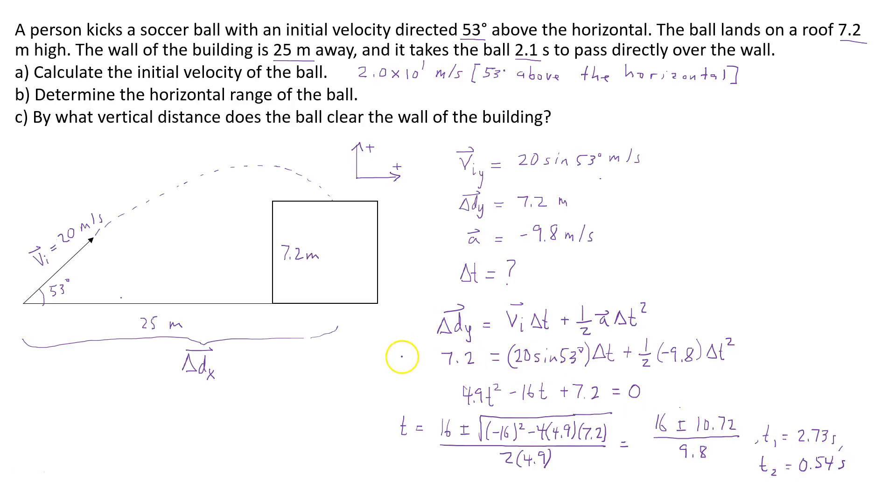And the reason why there are two times is because initially the ball reaches a height of 7.2, so let's say around here. And that occurs at 0.54 seconds. So then it goes higher, higher, higher, and then eventually once it lands on the roof of the building, it once again has a displacement of 7.2. So we're going to use the larger value. So this is the value of time when it hits the roof.